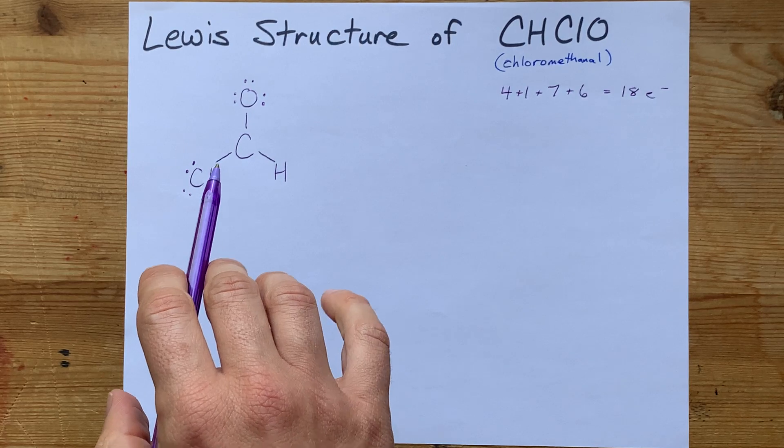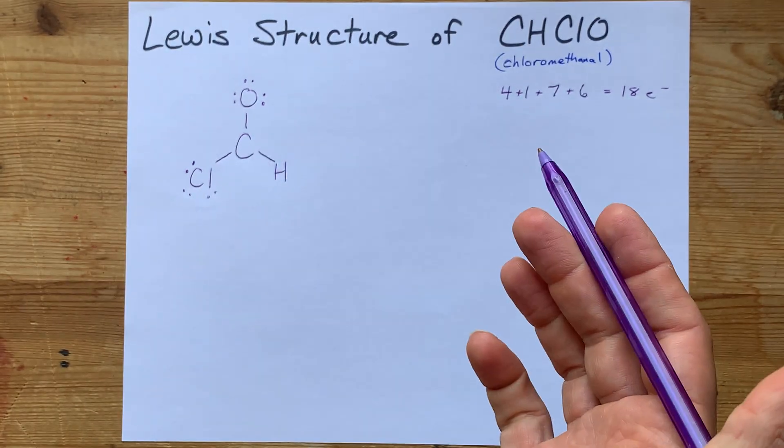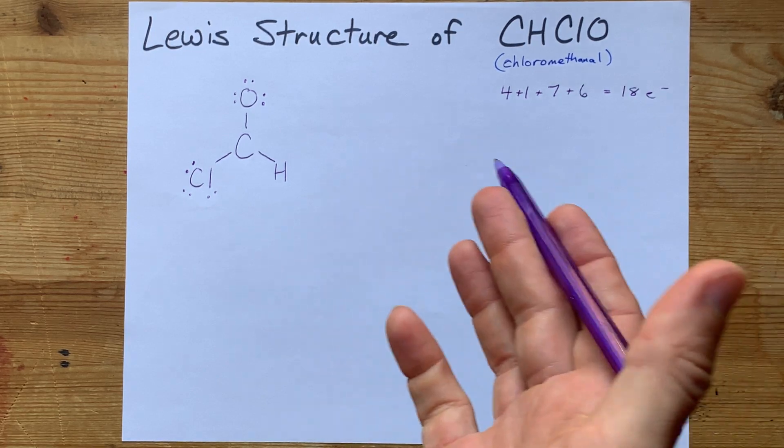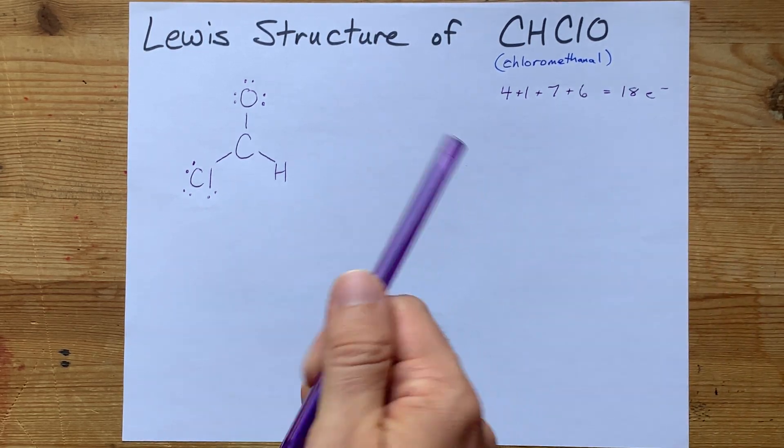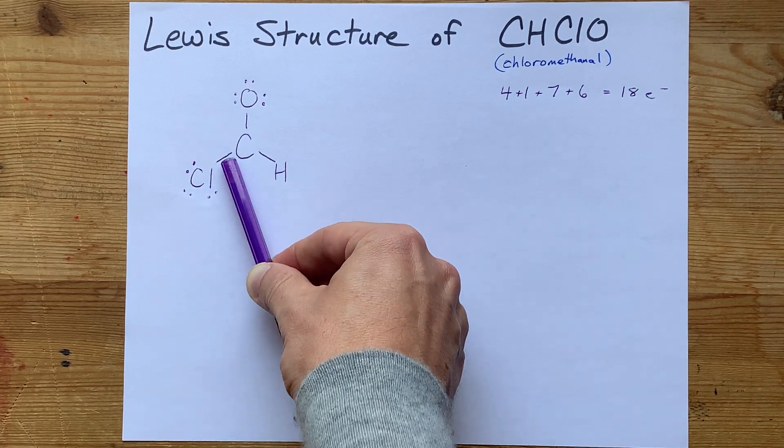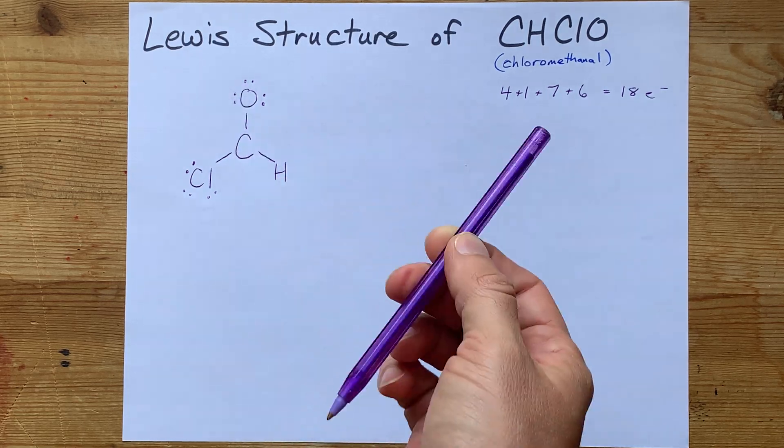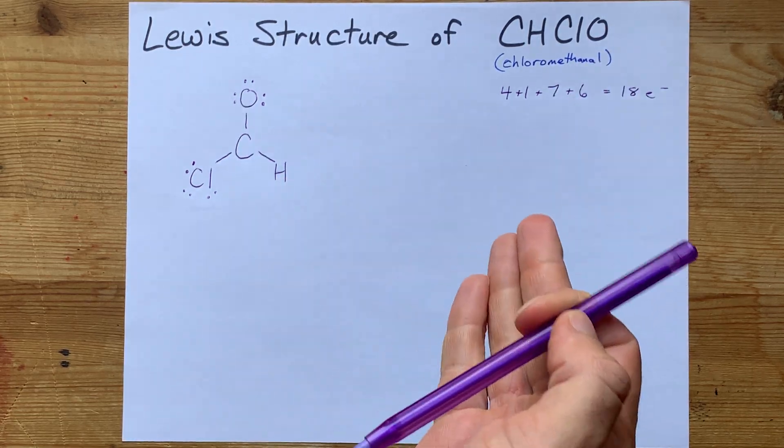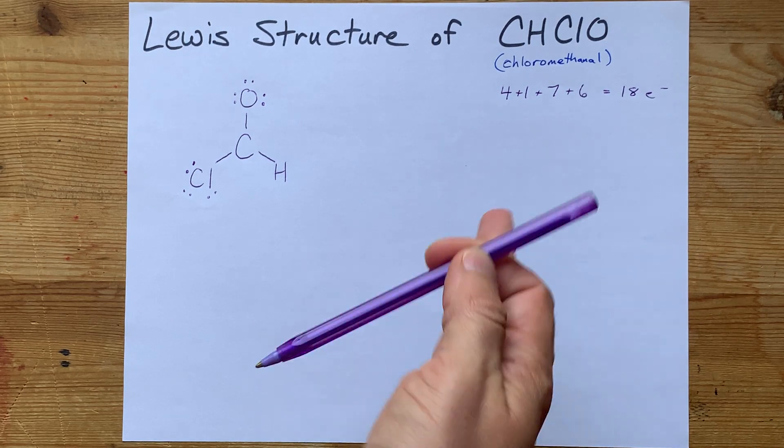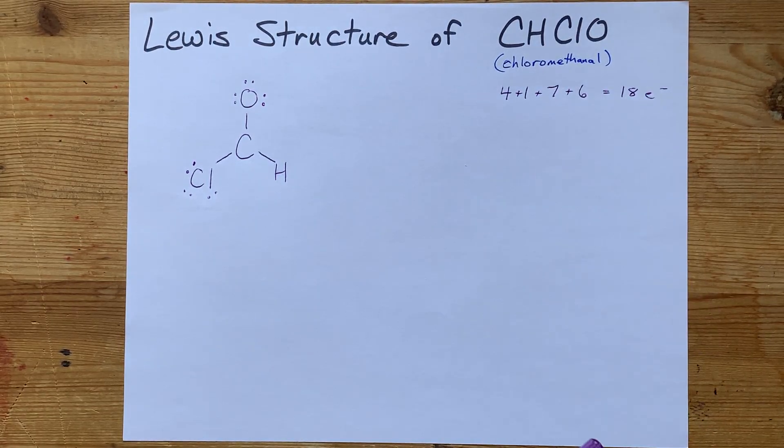This carbon has 2, 4, 6 electrons around it. Oh, it wants 8. That's what the octet rule is all about. So we have to decide if we're going to bring a lone pair from the chlorine in to make a double bond or the oxygen. Now, I've already told you oxygen likes making 2 bonds. Surely you know that because H2O, the formula for water, has oxygen bonded to 2 hydrogens.